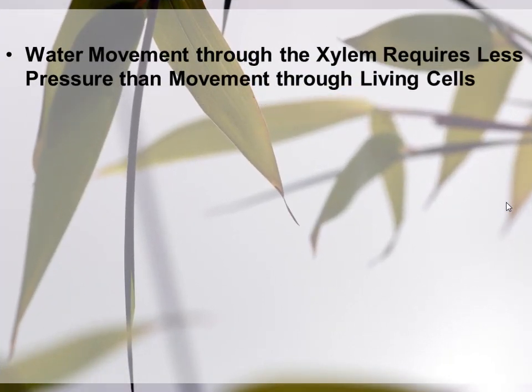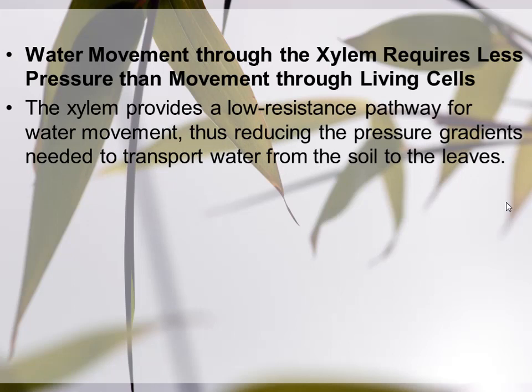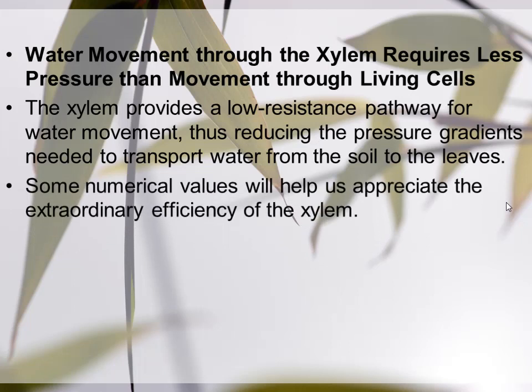Water movement through the xylem requires less pressure than movement through living cells. The xylem provides a low-resistance pathway for water movement, thus reducing the pressure gradient needed to transport water from the roots to the leaves. Compared to other pathways, the xylem pathway shows much less resistance, allowing water to move more efficiently from soil to root and then to the leaves.